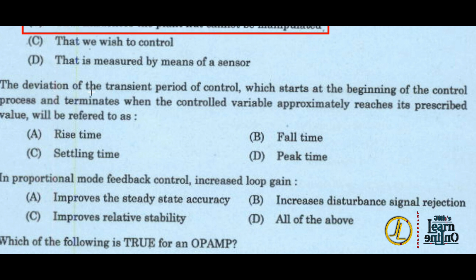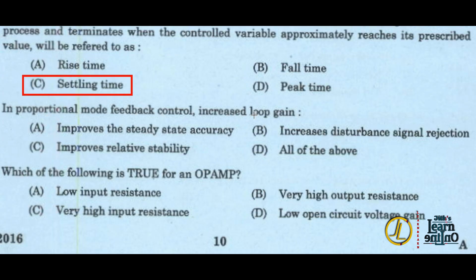Next: the deviation of the transient period of control which starts at the beginning of the control process and terminates when the controlled variable approximately reaches its prescribed value is referred to as settling time — option C. In proportional mode feedback control, increased loop gain increases steady-state accuracy, improves disturbance signal rejection, and improves relative stability — all of the above, option D.